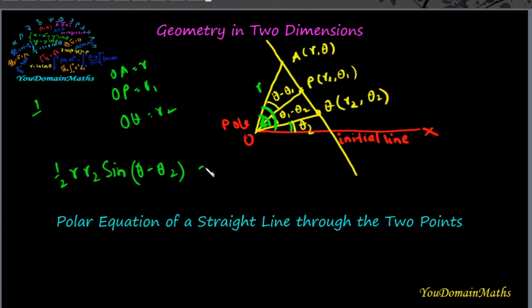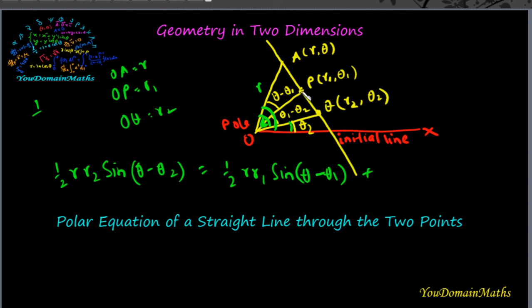Similarly, the area of triangle AOP equals half of r·r₁·sin(θ − θ₁), and the area of triangle POQ equals half of r₁·r₂·sin(θ₁ − θ₂).